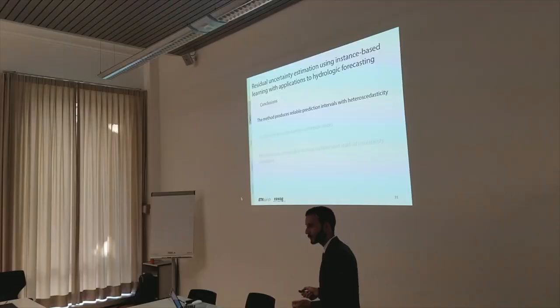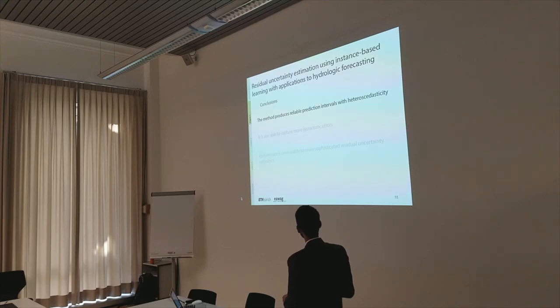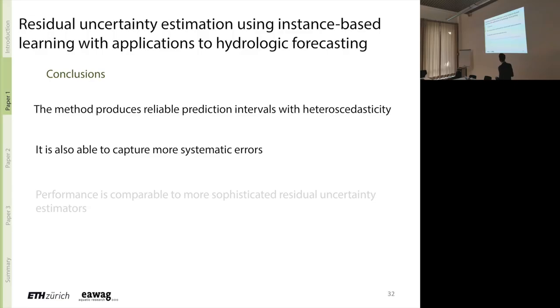So conclusions, the method produces reliable intervals. It has a tendency also to capture some of the more systematic errors. So this resampling technique is a model plus an uncertainty analysis technique. If in the past your model consistently overestimated or underestimated, that gets reproduced in your error samples and then your bands move above or below your model prediction. The performance is comparable to other more sophisticated residual uncertainty estimators.